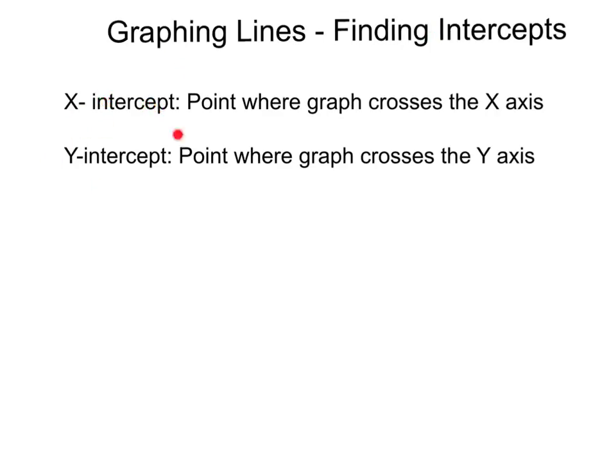One for the x-axis, one for the y-axis. The x-intercept is the point where the graph crosses the x-axis, and the y-intercept is the point where the graph crosses the y-axis.